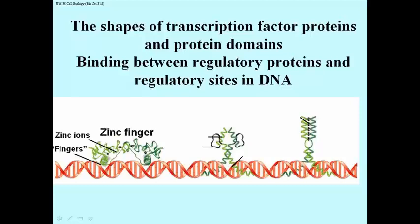One of them is the so-called zinc finger protein. This is a protein that is associated with zinc ions, peppered as it were throughout the protein. And then there are these helical regions that project from the protein into the major groove of the DNA. That's the business end of the zinc finger molecule when it binds to a sequence it recognizes.